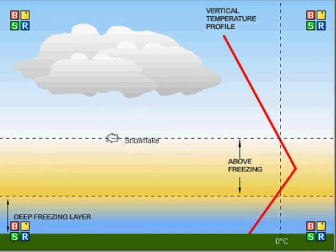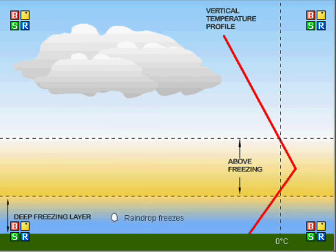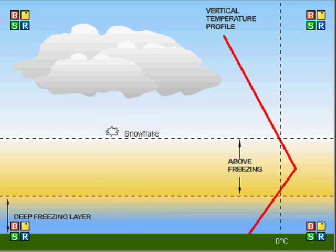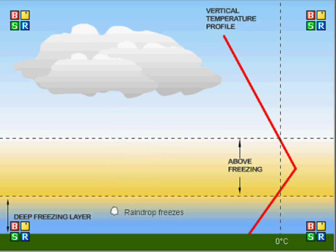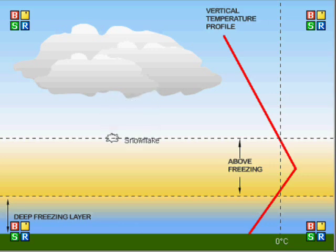Exhibiting similar characteristics to the freezing rain profile is that of sleet. The difference is that as snow falls and melts at approximately 1700 meters, it will eventually reach the deep freezing layer much earlier in comparison, at a height of approximately 800 meters. This thicker deep freezing layer allows the rain droplets to fully freeze, forming sleet.